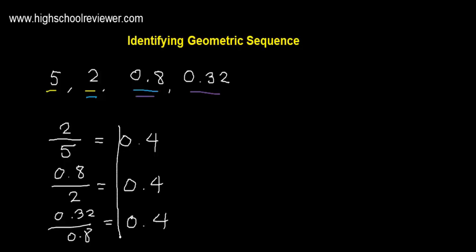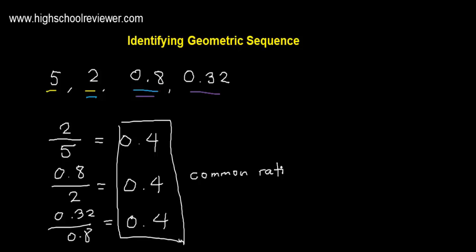As you can see, we have the same ratio for all pairs, so this is called a common ratio. Since we have a common ratio, this is a geometric sequence.